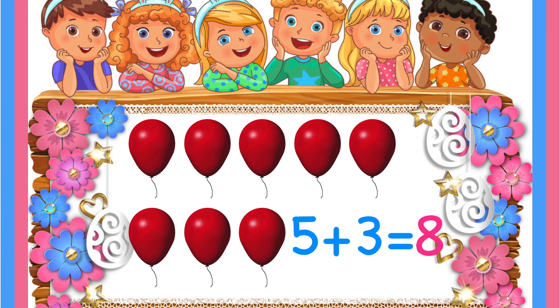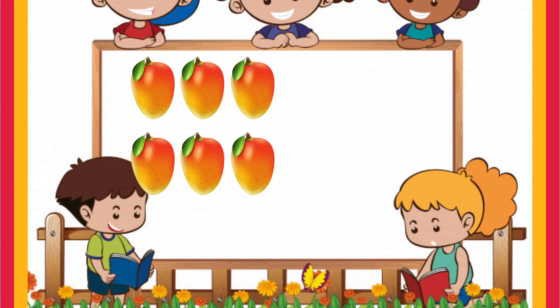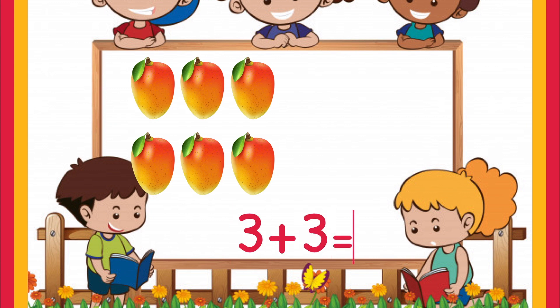Let's see another example. Yummy mangoes there! Let's count them. You have one, two, three mangoes and your mom gives you another three mangoes. So here the addition you are going to do is three plus three, which means you have three mangoes and you are going to add another three. Let's count how many total mangoes there are with you: one, two, three, four, five, six. So the answer is six.